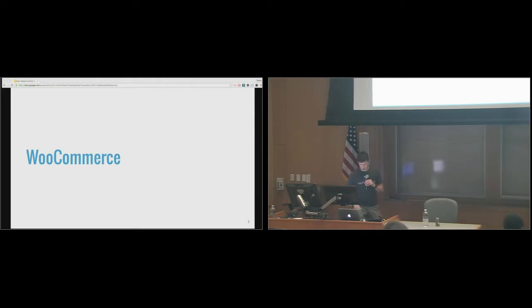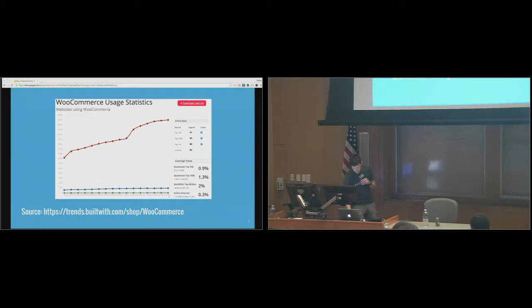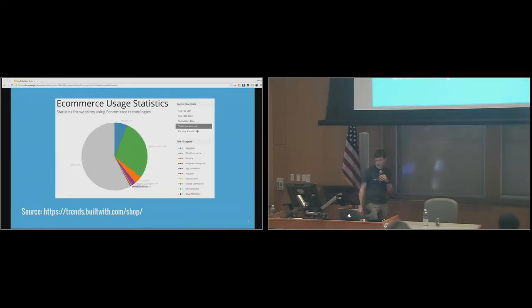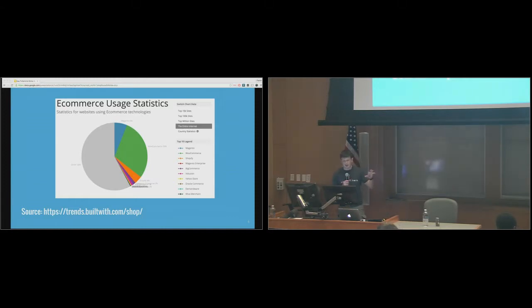I've got two slides of history and then I'll show you the software. This is the growth of WooCommerce — just the last year. It's about five years old and it's been growing pretty fast. When you look at the entire internet and how much market share it has, it's right around 30 percent. Magento is like the establishment — they've been around for 10 years and still have a lot of really big sites, but a lot of the smaller sites are now WooCommerce, which is pretty impressive.